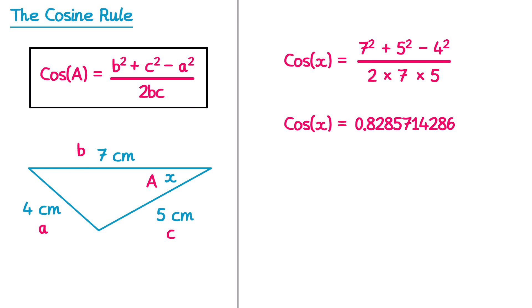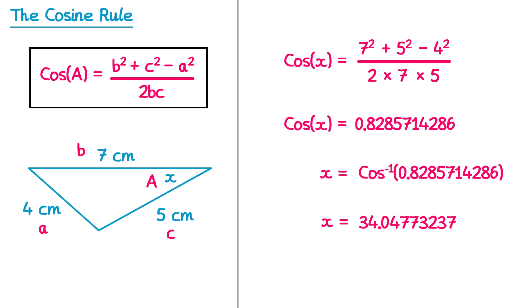Now since we have cos of x equals this number, but we just want to find x, we're going to use inverse cos. So on the left hand side we would have x, and on the right hand side we would do inverse cos of this number. If you did inverse cos of that number you'll find that x is equal to this number here. Let's round this one off to one decimal place — that would be 34.0, and this is an angle, so it's degrees.